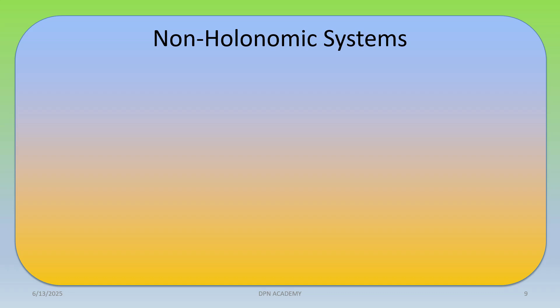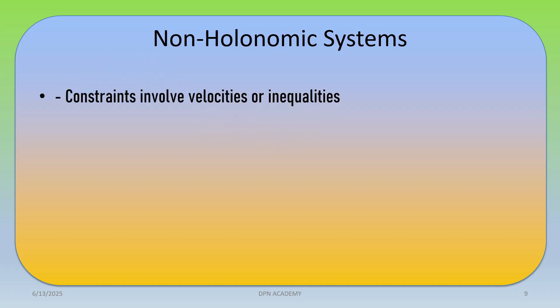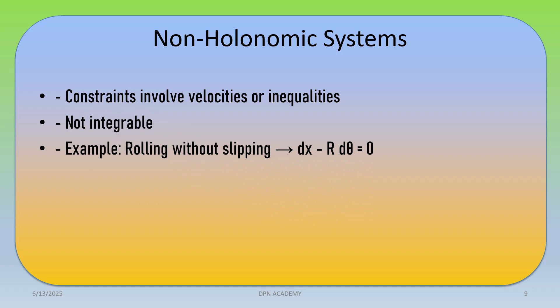In a non-holonomic system, constraints involve velocities or inequalities and are non-integrable, whereas holonomic constraints are integrable. An example of a non-holonomic constraint is rolling without slipping, expressed as dx − r dθ = 0. These are most important while solving problems.